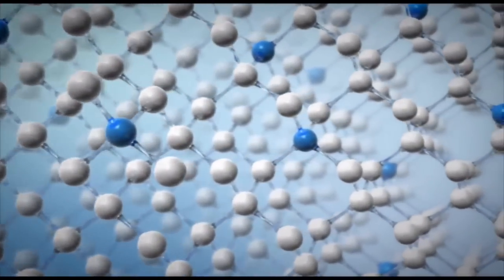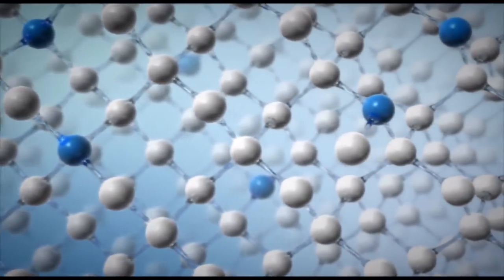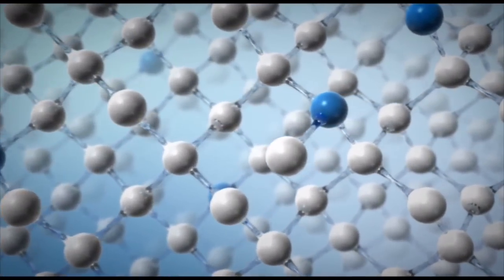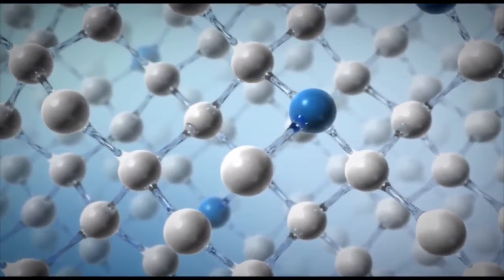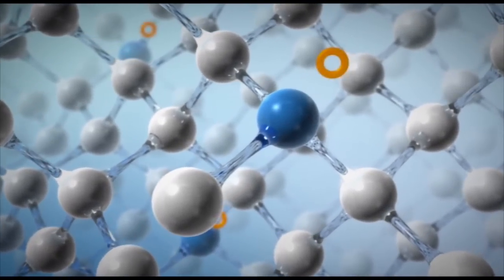The base material is silicon, which previously was mixed with boron atoms during crystallization. Boron is used because it has three outer electrons, one less than silicon. A positively charged hole is thus created in the atomic bond.